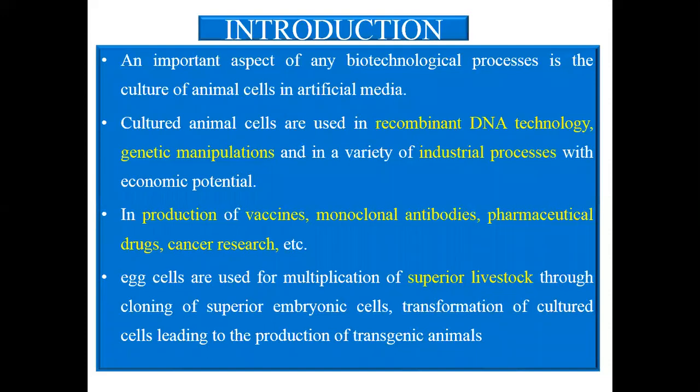In the production of vaccines, monoclonal antibody, pharmaceutical drugs, cancer research, etc., animal cell and tissue culture is very much necessary. Egg cells are used for the manipulation of superior livestock through cloning or superior embryonic cells, and the transformation of cultured cells leading to the production of transgenic animals. These are all aspects of the animal tissue culture system.